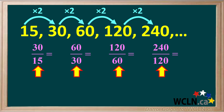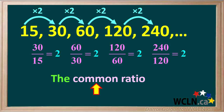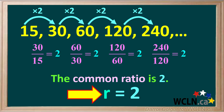If we take the ratio of each term to the one preceding it, we get 2 for each ratio. In a geometric sequence, the ratio of each term to the preceding one is called the common ratio. And in this particular sequence, the common ratio is 2. The common ratio is depicted by the letter r. So in this sequence, r equals 2.